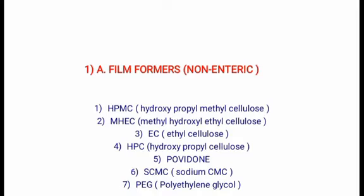The first part of tablet coating composition is film formers in non-enteric materials. The first is HPMC, that is Hydroxypropyl Methylcellulose. It is prepared by reacting alkali-treated cellulose with methyl chloride and propylene oxide. When used alone it forms bridging and a rough tablet surface. It is cheap, flexible, highly resistant to heat and moisture, and has no taste and no odor.